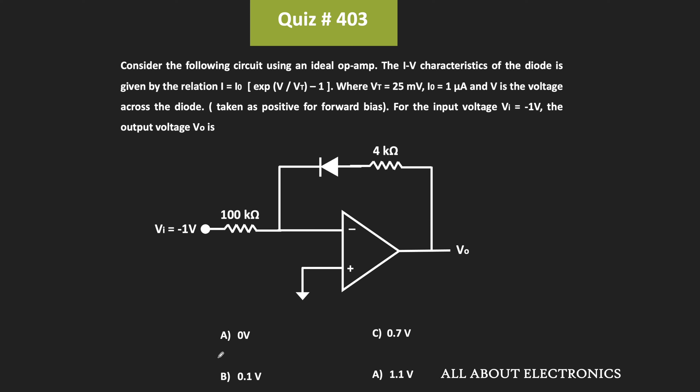From this we can say that for the given circuit, the output voltage Vout is equal to 0.1V, and therefore option B is the correct answer.